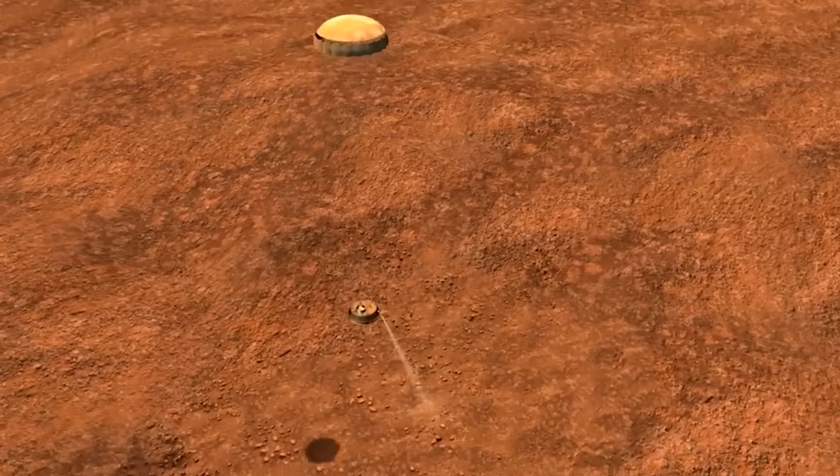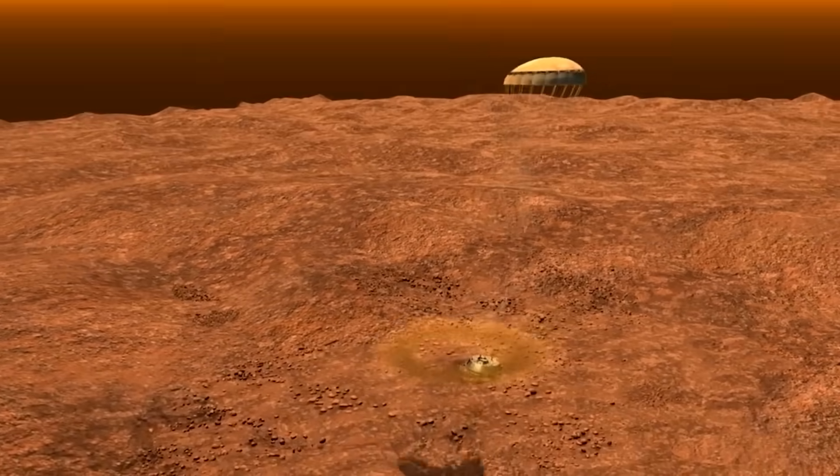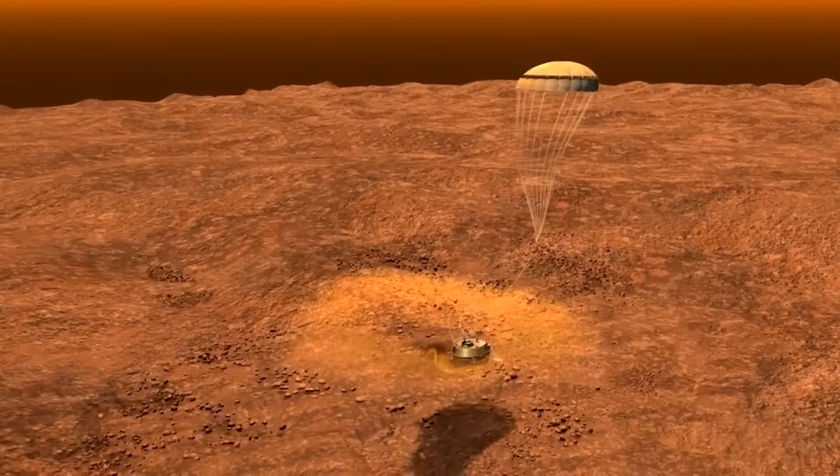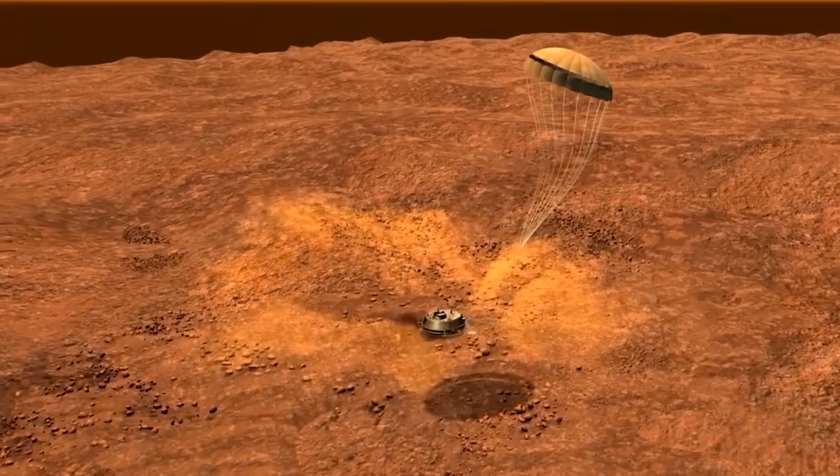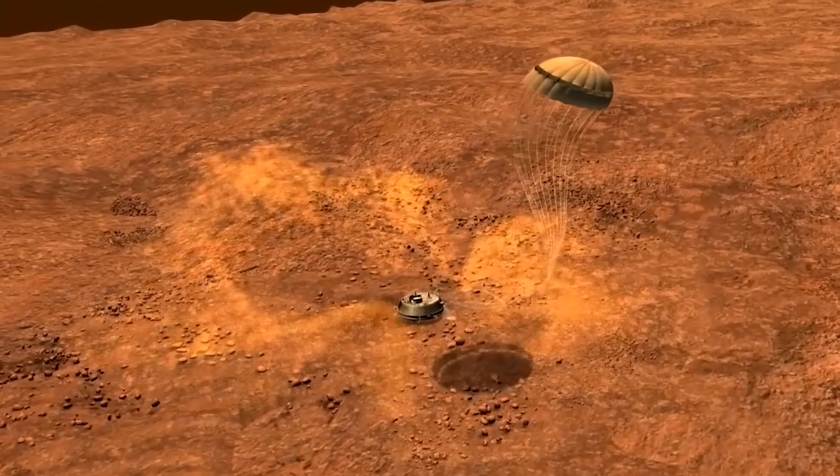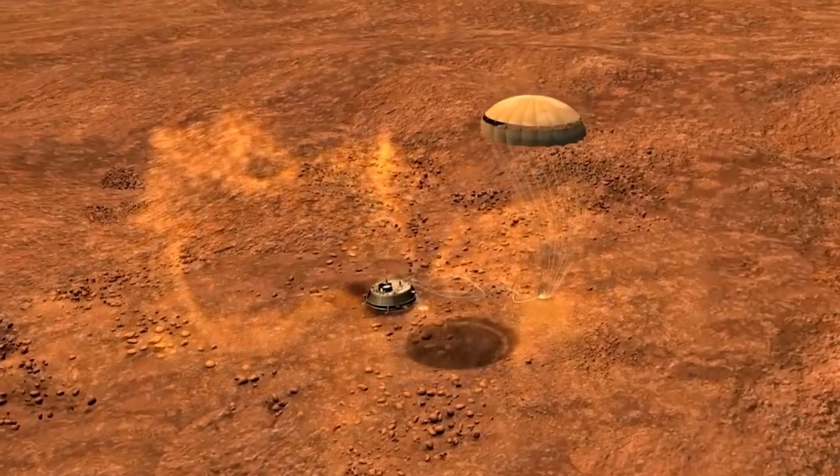So what Huygens found was pretty amazing, but it did fail to uncover the most intriguing mystery of Titan, the liquid methane. It seemed to land in the right place, the bottom of a river, but it just arrived at the wrong time. So where did the liquid go?